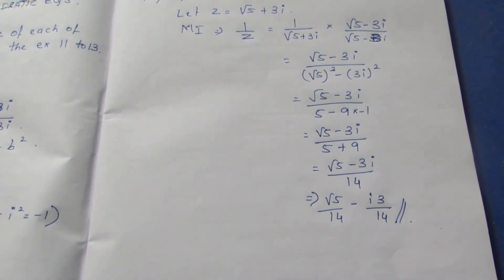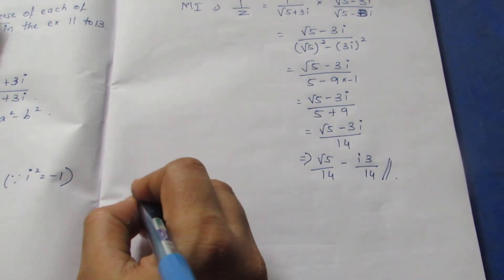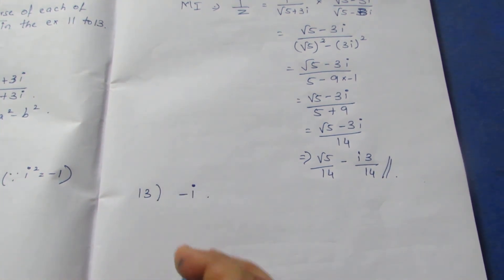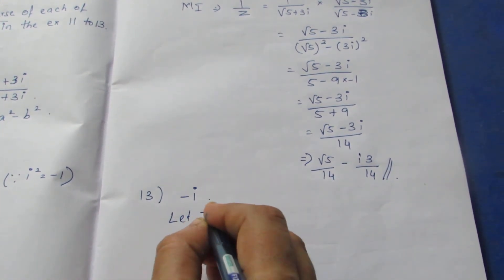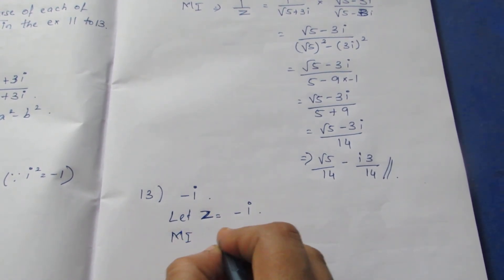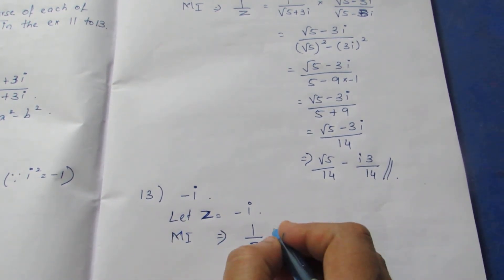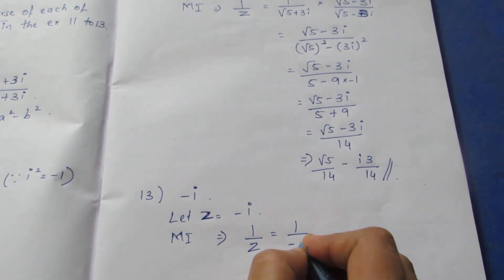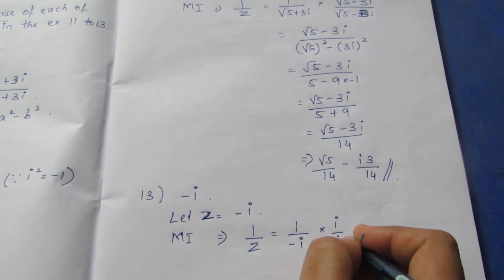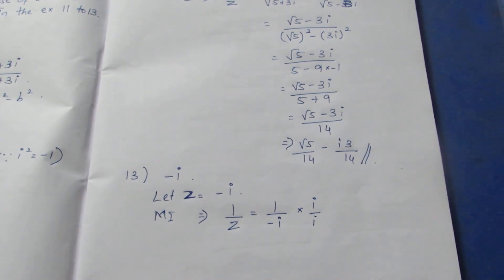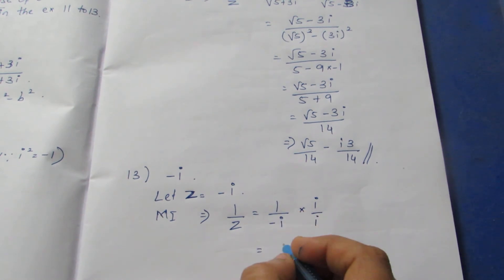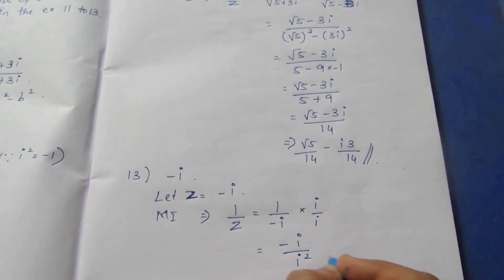We will move on to problem 13. They have given the number to be minus i. So we can take let z equal to minus i. We want the multiplicative inverse, so we need to take the reciprocal: 1 by z, which becomes 1 by (minus i). We need to conjugate this, so we can multiply only with i — not with the minus sign — so it becomes times i over i. On the numerator we can bring the sign over, so the numerator becomes i, and the denominator becomes i squared.